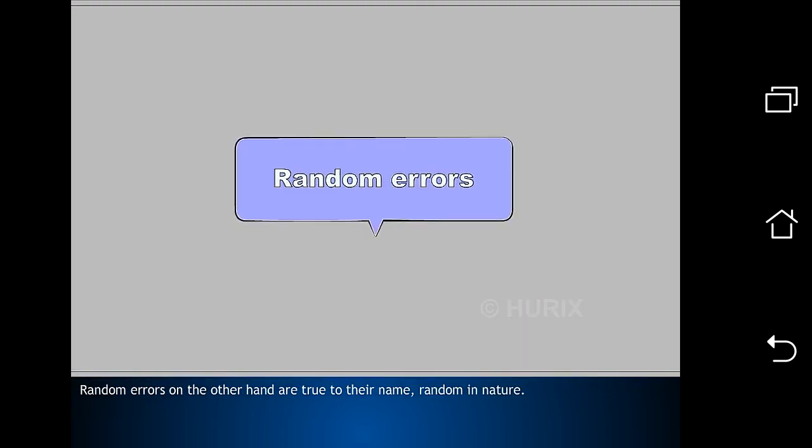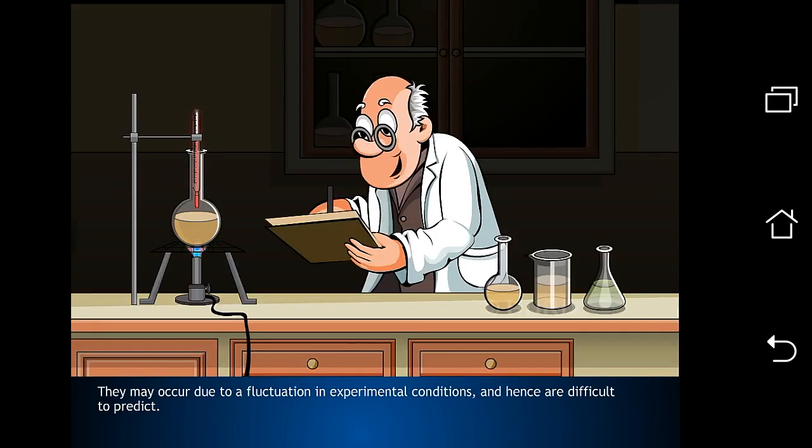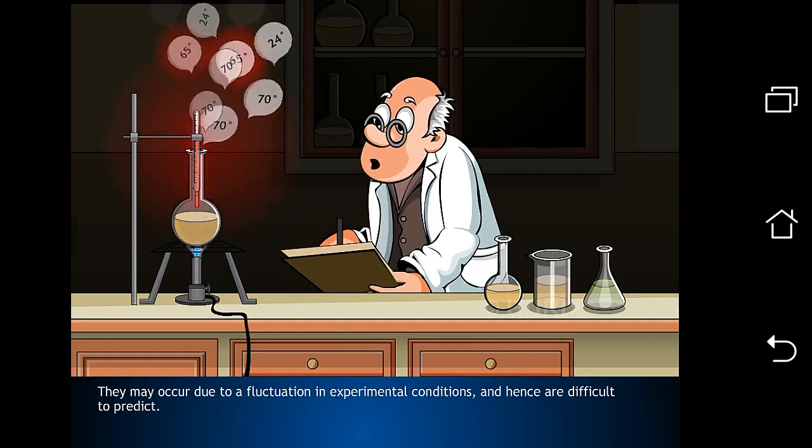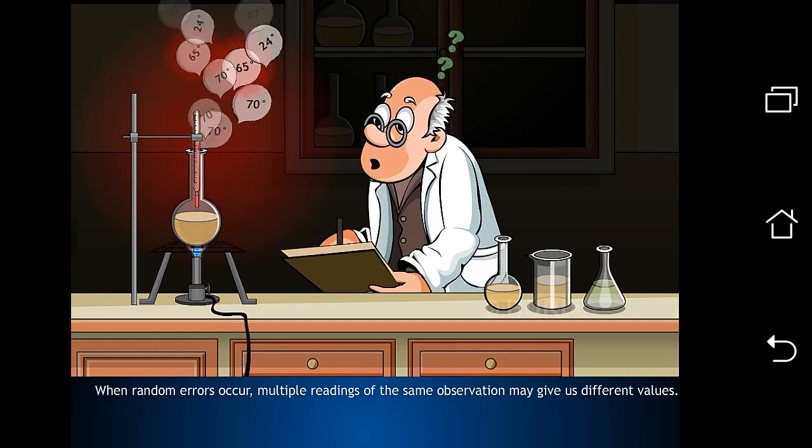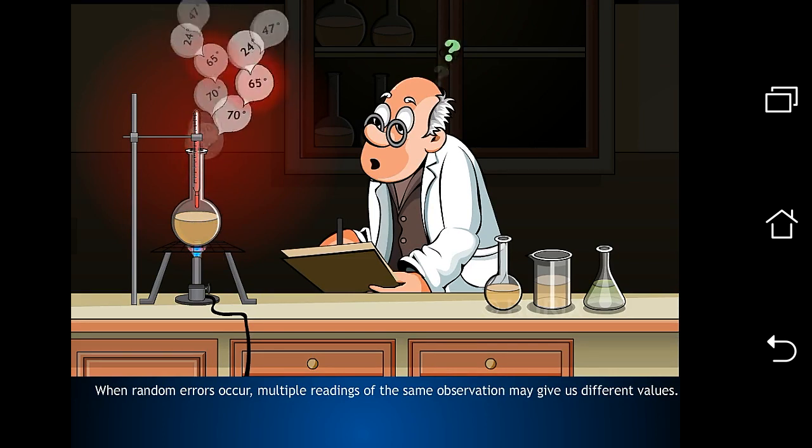Random errors, on the other hand, are true to their name, random in nature. They may occur due to a fluctuation in experimental conditions and hence are difficult to predict. When random errors occur, multiple readings of the same observation may give us different values.